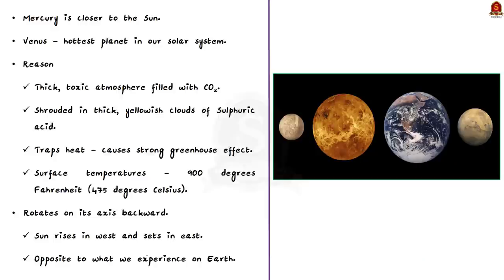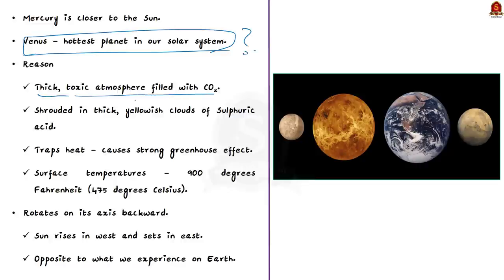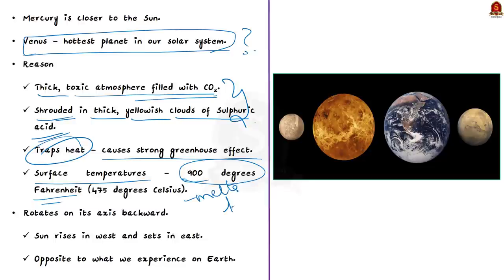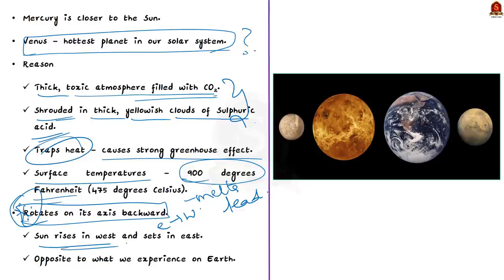Even though Mercury is closer to the sun, Venus is the hottest planet in our solar system. The first reason is that Venus has a thick toxic atmosphere filled with carbon dioxide. The second reason is it is constantly covered in thick yellowish clouds of sulfuric acid. Due to these two reasons, Venus traps heat causing a strong greenhouse effect. Surface temperatures on Venus are about 900 degrees Fahrenheit, hot enough to melt lead. Another big difference is that Venus rotates on its axis backwards from east to west, meaning the sun rises in the west and sets in the east.